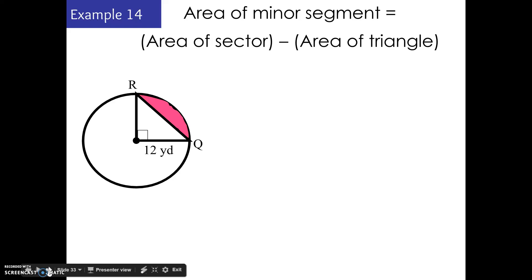We could also find the area of a minor segment, just that pink area, by taking the area of the sector and subtracting the area of the triangle that is formed there by those two radii. To do that again, if you wanted to try that, the area of the minor segment would be 41.10 yards squared.